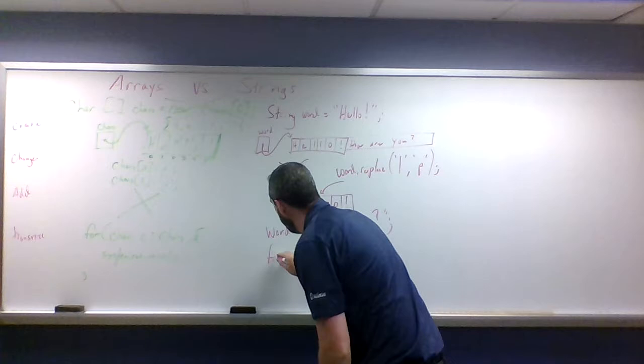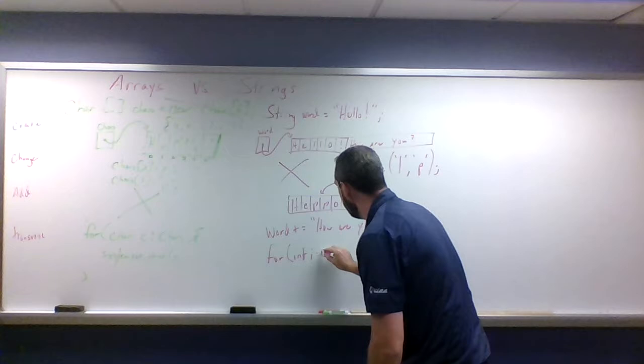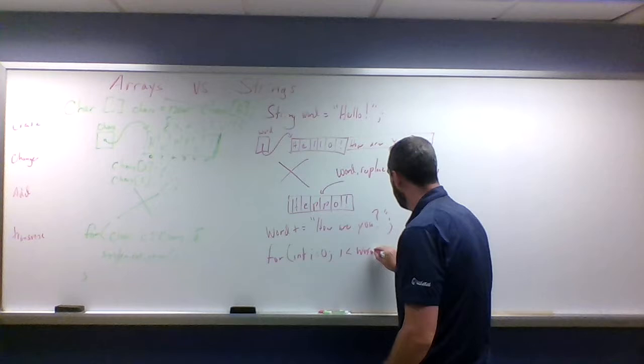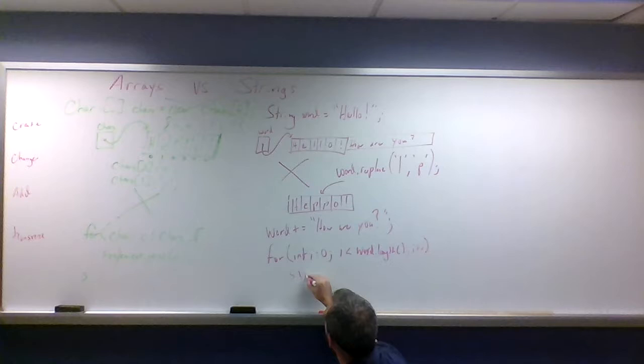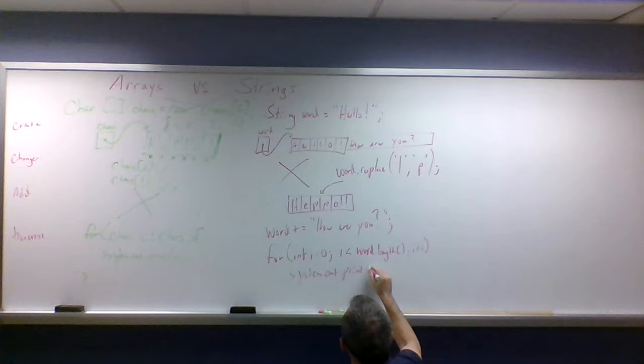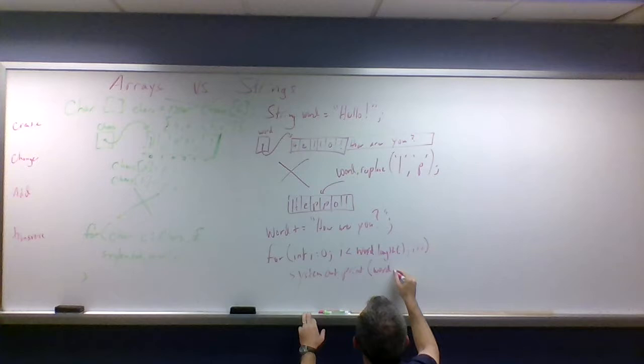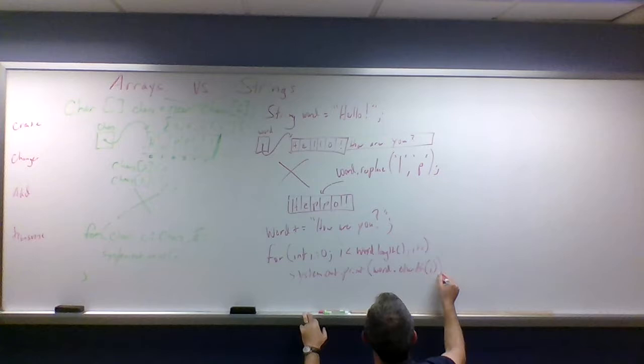For string, suppose we use that traditional for loop. For int i equals zero, i is less than word dot length parentheses, i plus plus, and we could say, system dot out dot print. And now, we've got to go and get the individual letter that we want. So we'd say, hey, word dot what character is at position i. That's going to print each letter of the string as well.